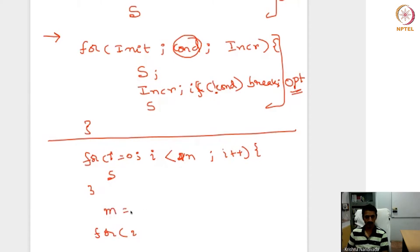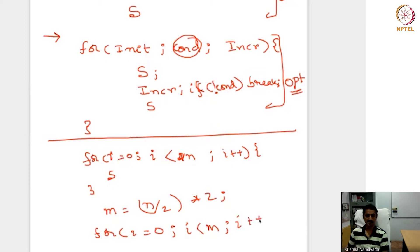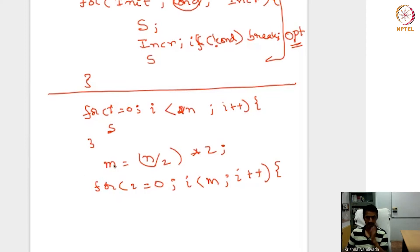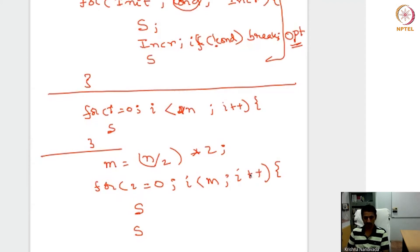I can write m equal to n integer-division 2, multiplied by 2. Then loop: i equal to 0, i less than m, and instead of i plus plus, I'll make it i equal to i plus 2. The body is S, and for the second copy I replace every occurrence of i with i plus 1.